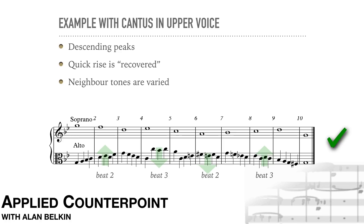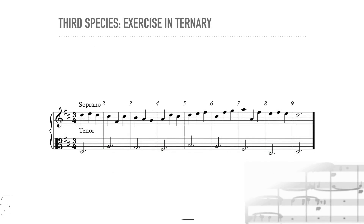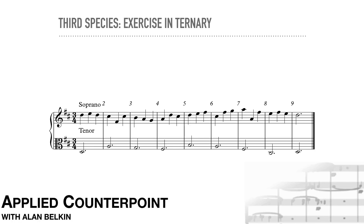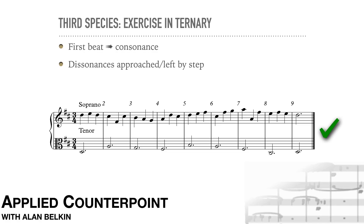One last comment about third species: although textbook species counterpoint is normally in 4/4 or 2/2 time, it's worth doing a few exercises in 3/4 as well. As before, the first beat is always a consonance, and dissonances are approached and left by step. Both passing and neighbor notes are possible, and the melodic structure again allows for direct and indirect routes. Very occasionally, a bar may occur with no non-harmonic tones — for example, measures two and seven in the 3/4 example.